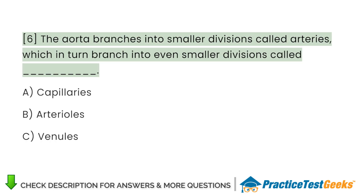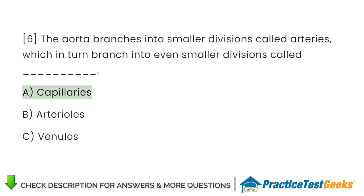The aorta branches into smaller divisions called arteries, which in turn branch into even smaller divisions called A. Capillaries. B. Arterioles. C. Venules.